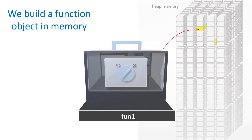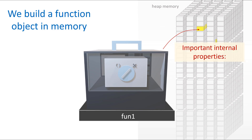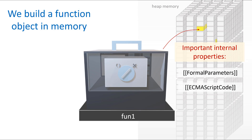When we declare a function we should visualize that the function itself would be a body in computer memory. The function is an object — almost like a regular object with a few additional properties that give us additional capabilities. One of these is a formal parameters internal property, where the parameters of the function tend to live. We also have an ECMAScript code property, where the body of the function tends to live. And then we have a call method, which is what really makes a function — it is this internal call method that allows us to call the function from outside, using the formal parameters and function body while sending arguments to the function.